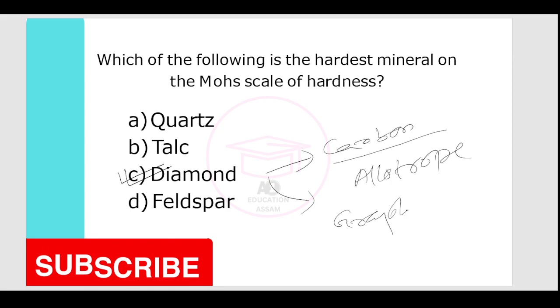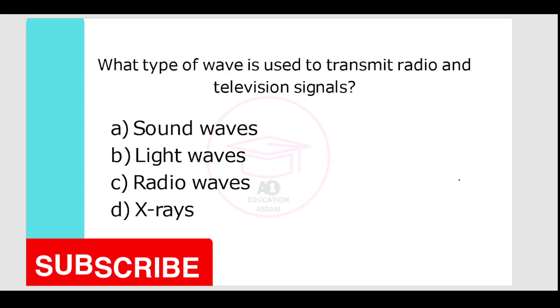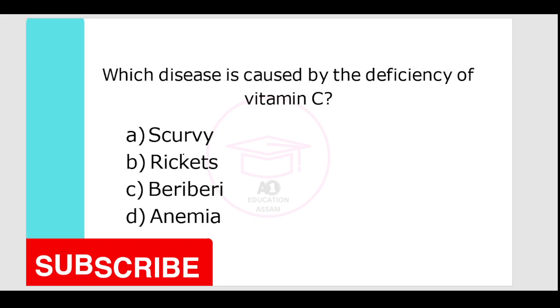What type of wave is used to transmit radio and television signals? Options are sound waves, light waves, radio waves. Your correct answer is option C, radio waves.